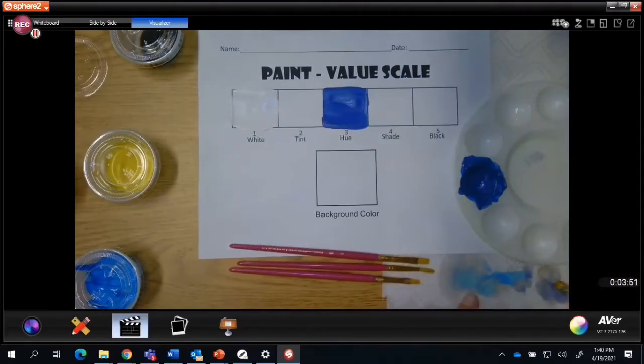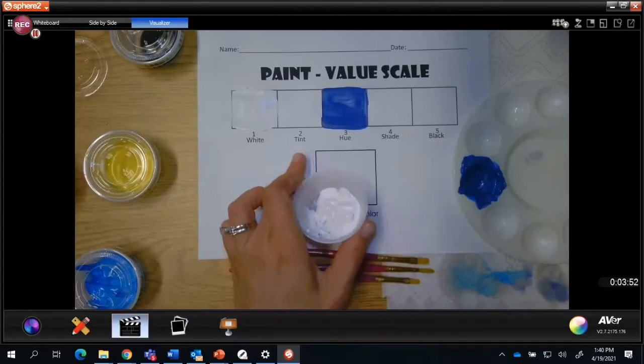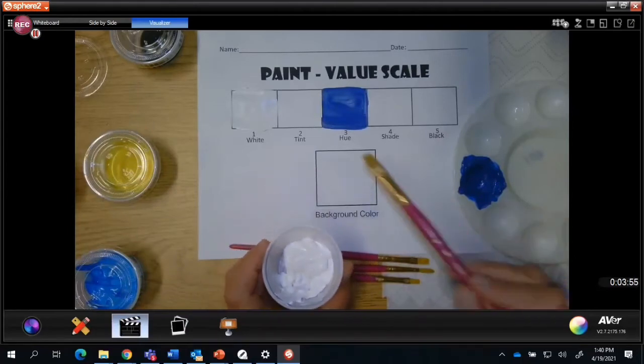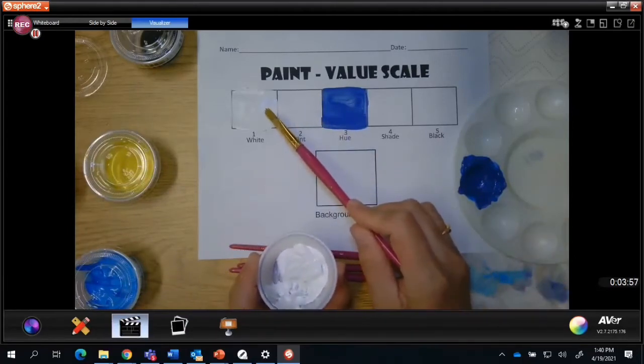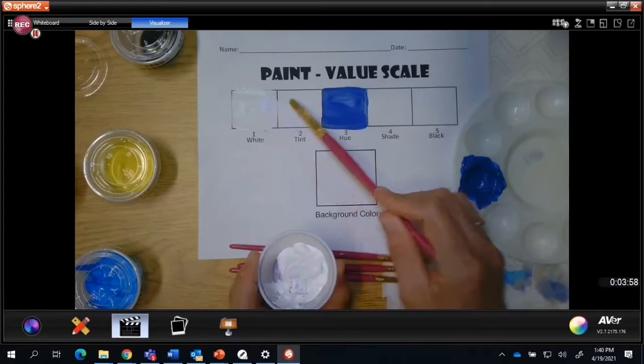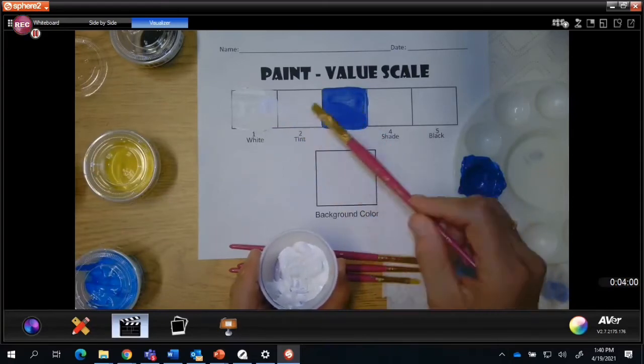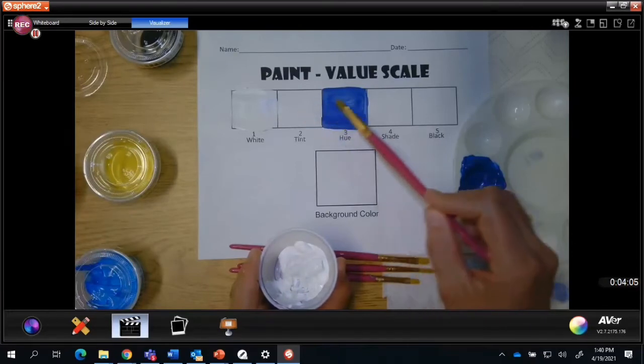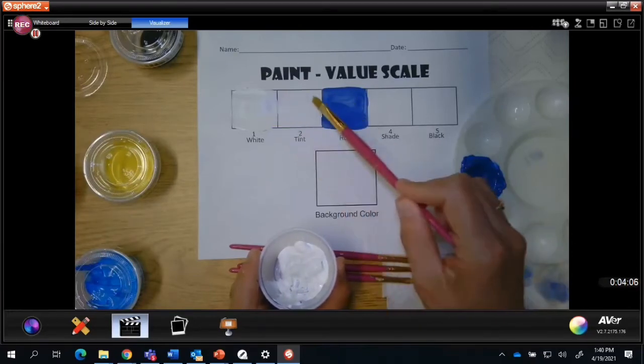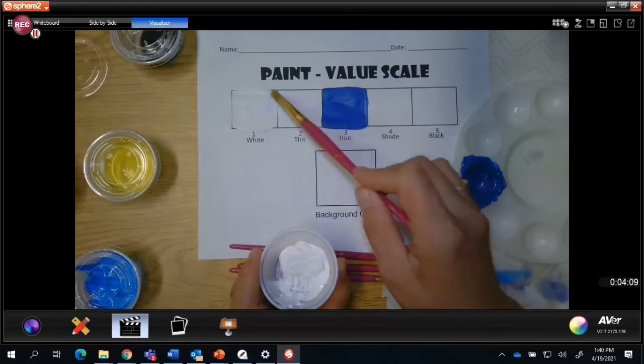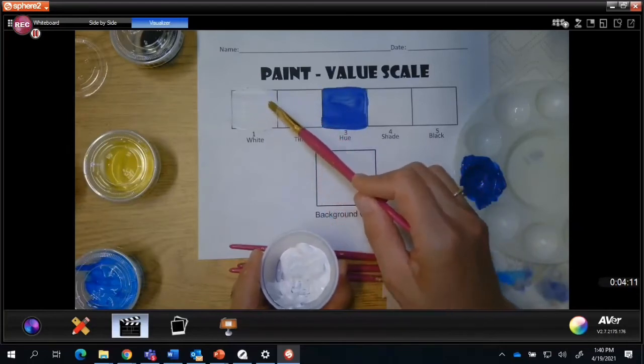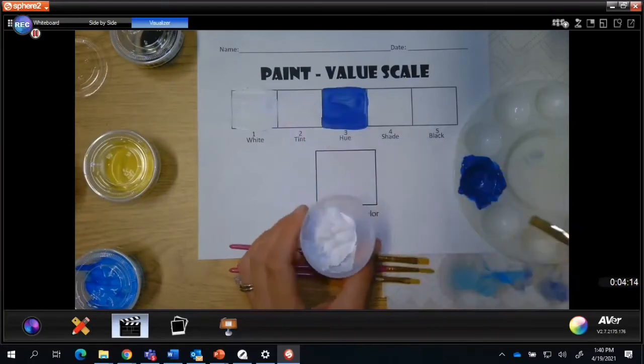The next thing I need to do is make my number two, which is my tint. I want my tint to be about halfway in contrast between my one and my three. I don't want my tint too close to my three because then there won't be enough contrast. I don't want my two to be too light because then there'll be too much contrast between the two and the three.